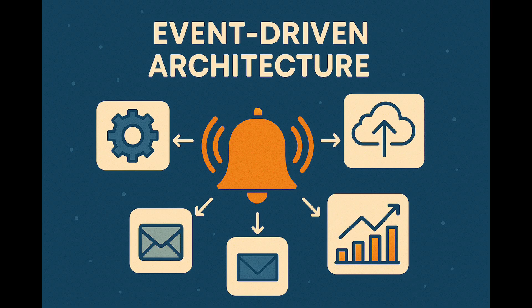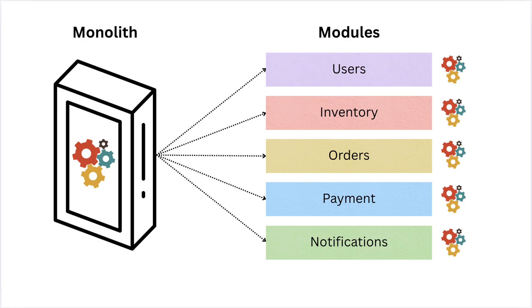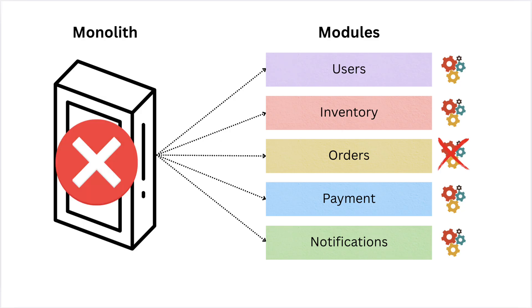Let's face it, traditional architectures can be a real pain. Think of a monolithic application — everything's crammed into one giant code base. When you need to make a change, you have to deploy the entire application, even if you're only modifying a small part of it. Scaling is difficult because you have to scale the entire monolith, even if only one component is under heavy load. And if one component fails, it can bring down the whole system. This is where event-driven architecture comes to the rescue.